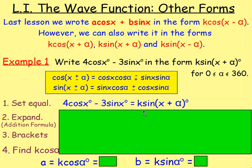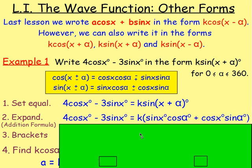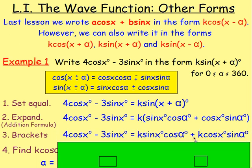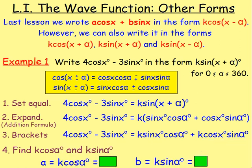From there, you expand the right-hand side. Remember, it's k times — put the k in the bracket and expand sin(x plus α). If you do that, you end up with sin cos plus cos sin. Then removing the brackets and multiplying by k, you have k sin x cos α plus k cos x sin α.